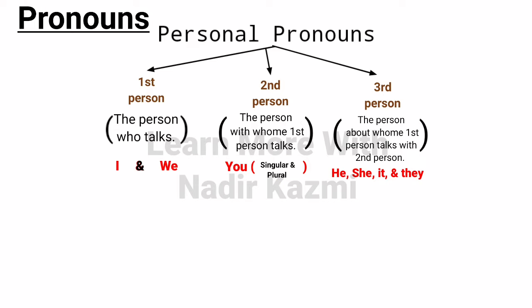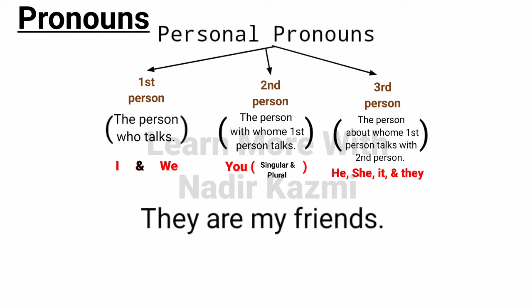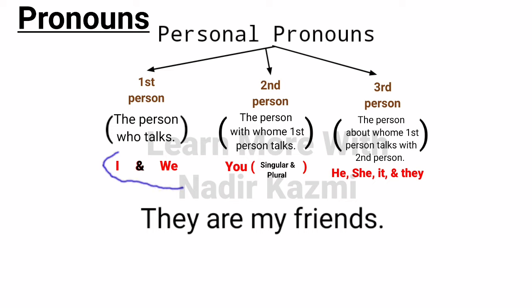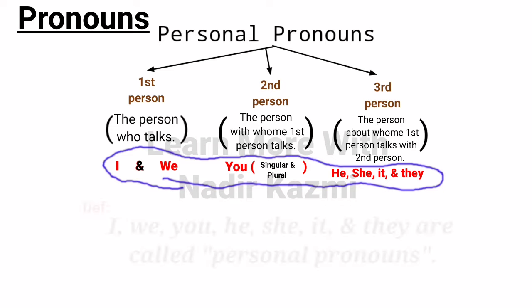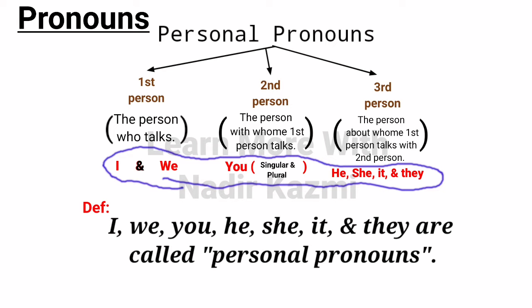For example, the sentence 'They are my friends' — this statement was made by me (I), so I is the first person. I spoke with you, so 'you' is the second person. And I talked about them (they), so 'they' is the third person. So all three together — first, second, and third person — are called personal pronouns: I, we, you, he, she, it, and they.